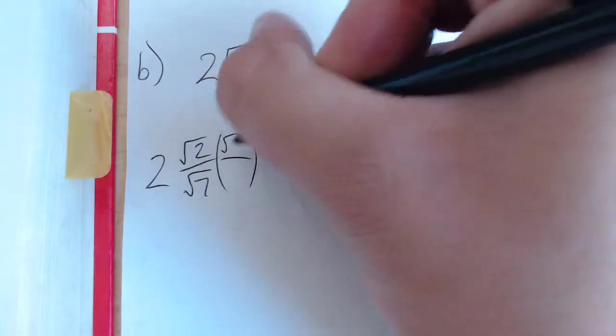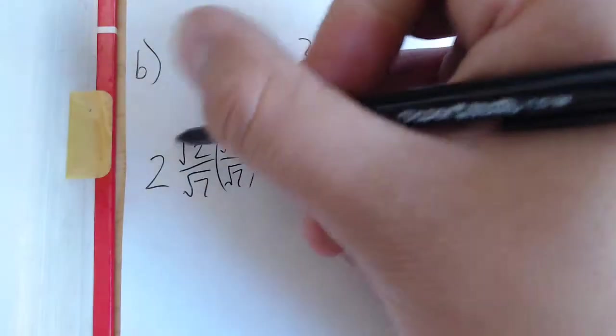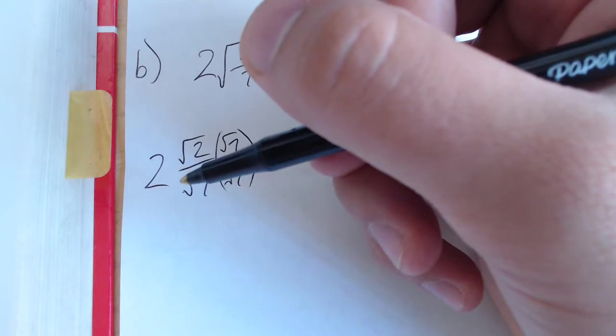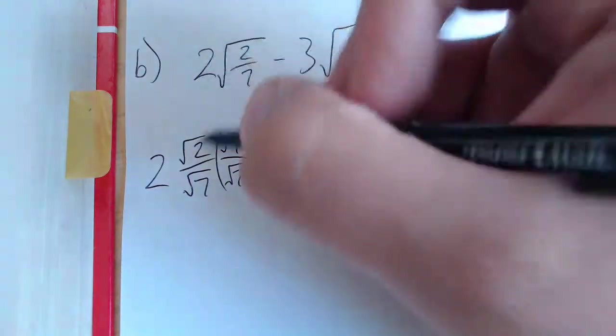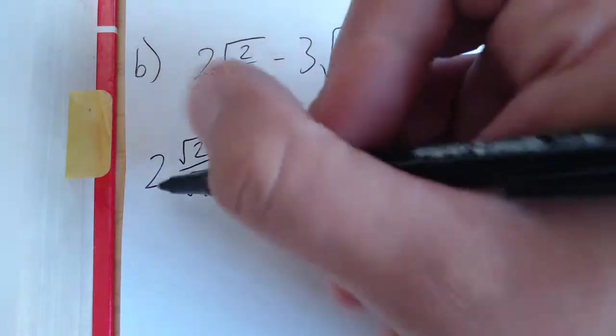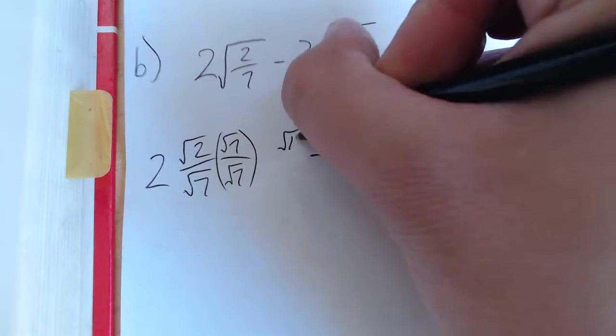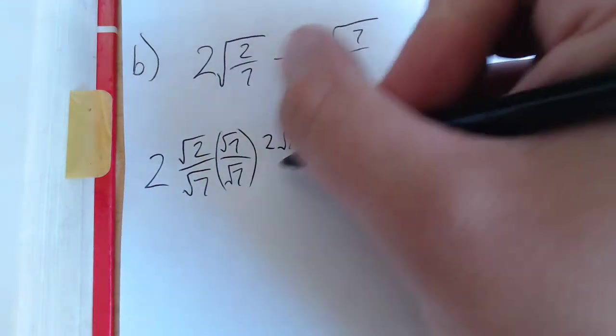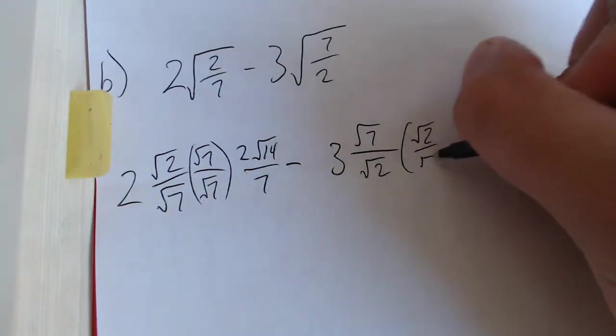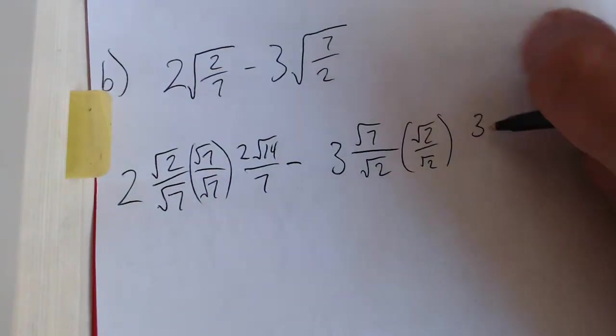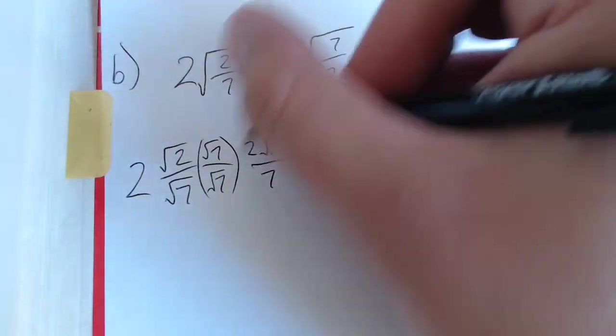Rationalize this one by multiplying by root 7 over root 7. That's going to give us - oh, and then we're also going to take our whole number. We're going to apply it directly to our numerator. So that's one thing that might be a little tricky here, is you may want to try to treat it like a mixed number. That's not the case with these. They can be treated as multiplication. So root 2 times root 7 will give us root 14. If we multiply 2 by that, we get 2 times root 14 over whole number 7.